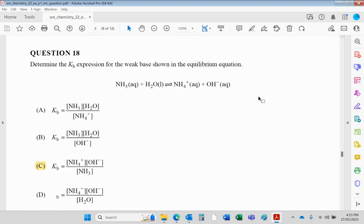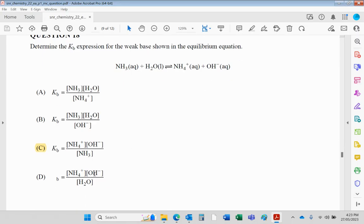Kp × Kb expression for a weak base: the products go on the top, so the ammonium ion times the hydroxide ion—so it's got to be C or D—and then on the bottom, the ammonia molecule. Water is not included.